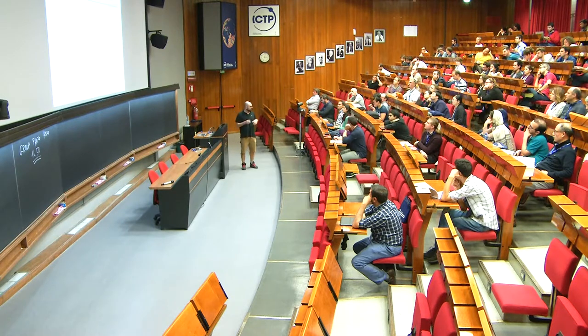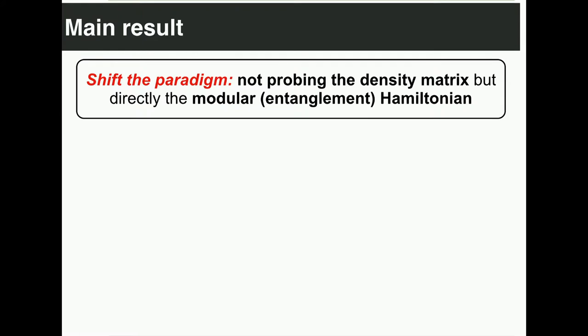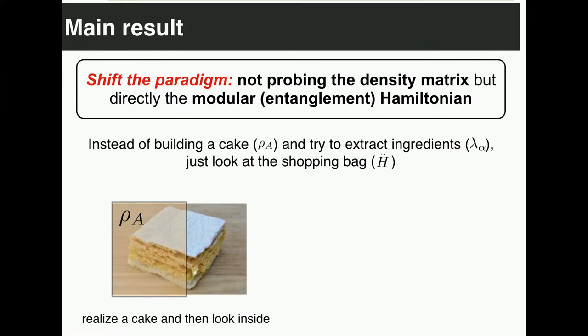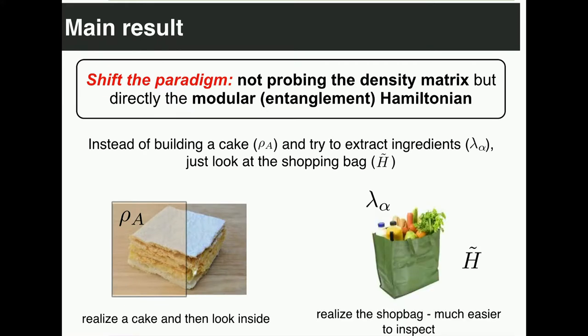Before telling you the main result in terms of physics, I would like to use a simple figure of merit. What we want to do is completely shift the paradigm from probing density matrices to directly engineering this entanglement Hamiltonians. This is a bit like: if you want to understand the ingredients of a cake, in principle we can try to measure the cake many, many times and try to guess how many grams of eggs were used. But alternatively, we can look at the shop bag and inspect it — and from that we can understand how many carrots, how much butter, and how many eggs were used.